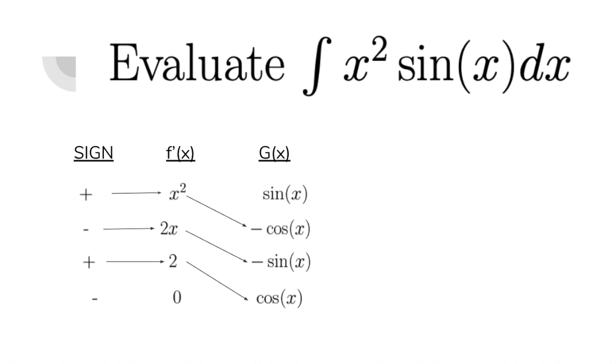And then for the second line, minus 1 times 2x times minus sine x is going to give me positive 2x sine x. And the third line, which you can think of as positive 1 times 2 times cosine of x gives me 2 cosine of x. So that's all the answer is.